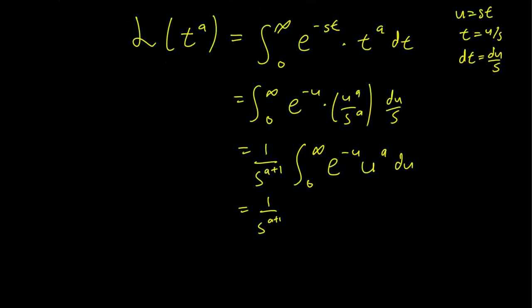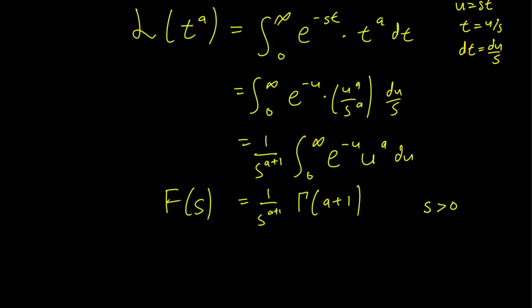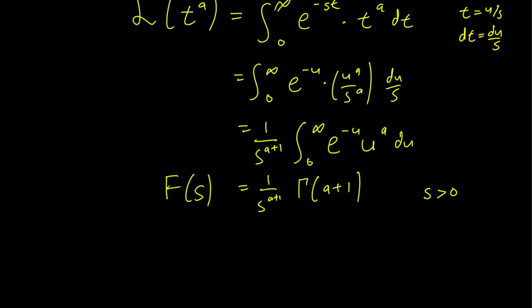But this is precisely the gamma function for a, and that gives us our Laplace transform. This is defined for all s greater than zero — if s equals zero we obviously have a problem in the denominator.